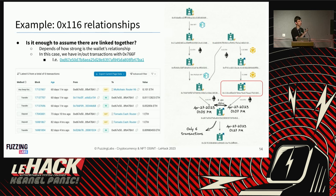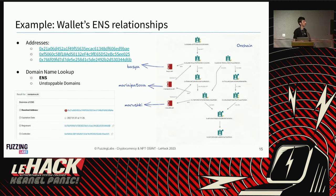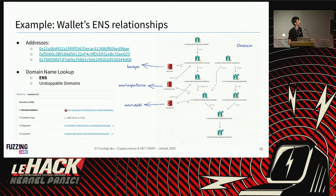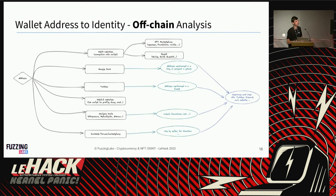With all related addresses gathered, we looked at on-chain data. We found three NFTs — Basia, Maria Ipatova, and Maluski — giving us usernames to search for. I tried using Maltego but results weren't great, so I moved on to off-chain analysis. Many websites allow users to log in by signing with their wallet, potentially linking their address to other information, most commonly an NFT marketplace like OpenSea.